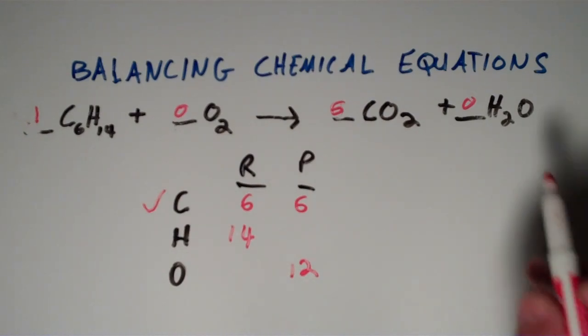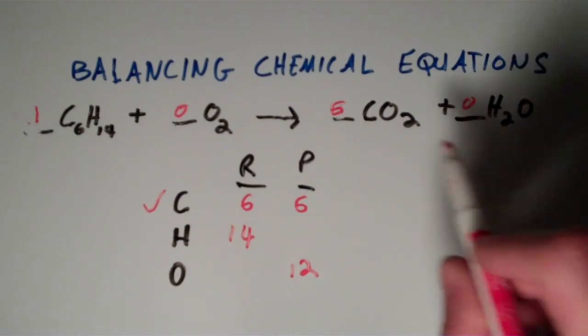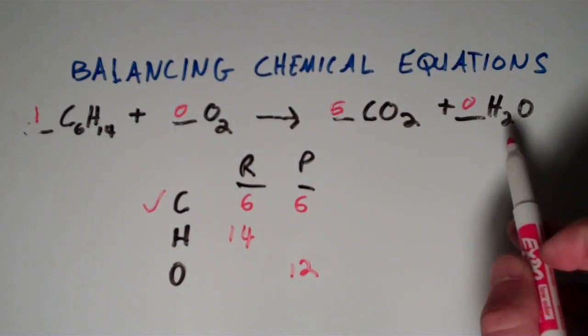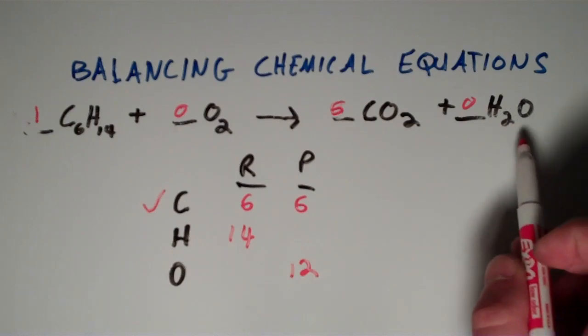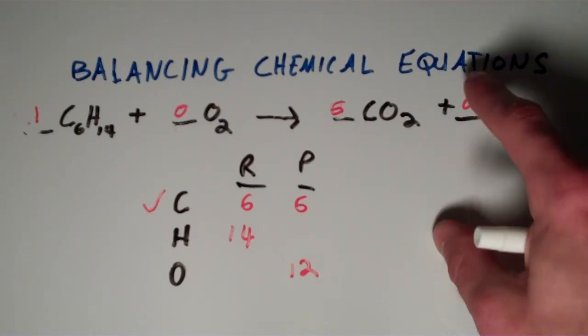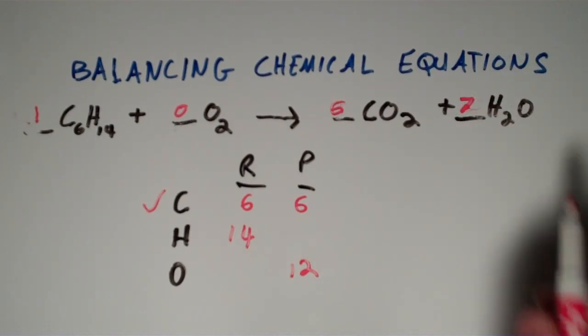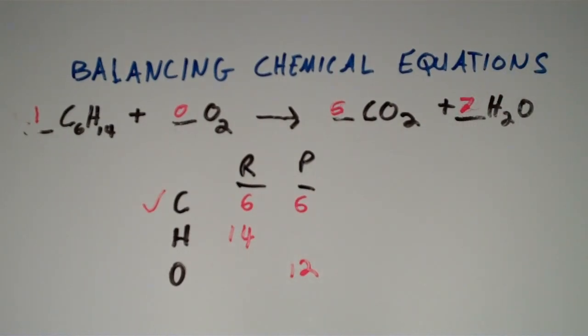So it looks to me like we have two hydrogens over on this side, and then over here we have 14 hydrogens. So I'm going to change the subscript on this to give it 14 hydrogens, and since there's two for every water molecule, I'm going to choose seven. Seven times two is 14.